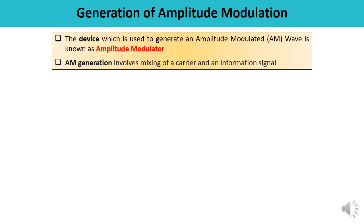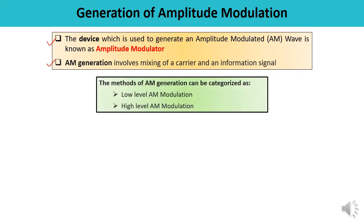A modulator is a device which is used to generate an amplitude modulated wave. The modulator performs a mathematical multiplication of the carrier and information signal, and the output is also of the product form — an analog product form. So AM generation involves the mixing of the carrier and information signal.